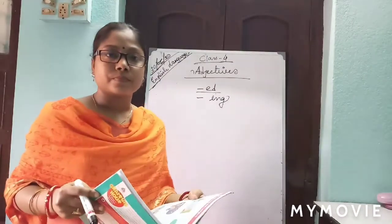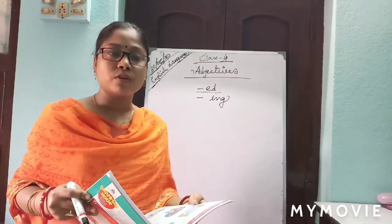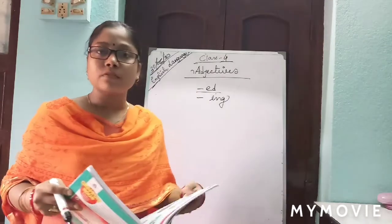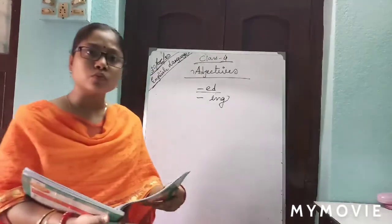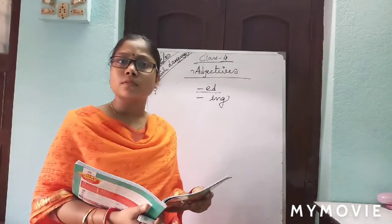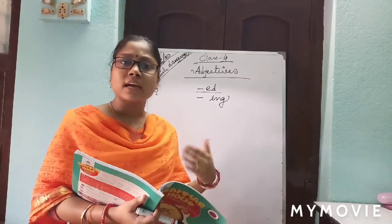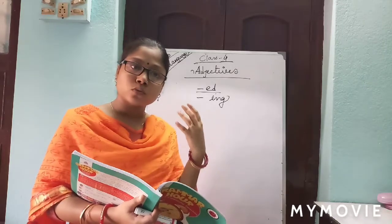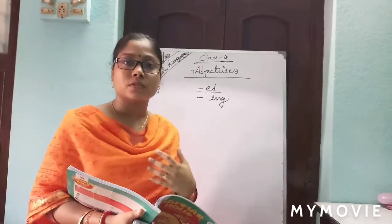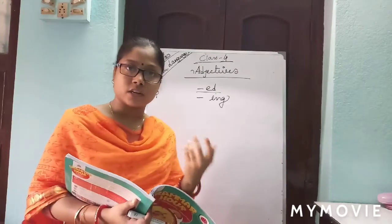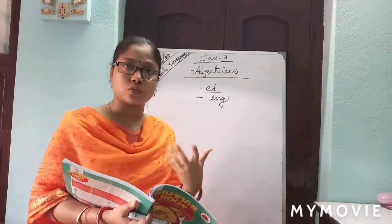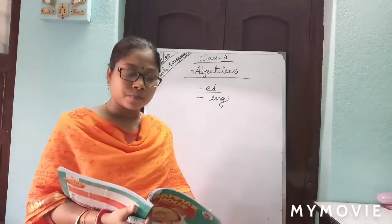These are a kind of adjective. We use '-ed' adjectives to talk about how we feel. For example, 'I'm very excited.' So 'excited' — we use it to describe how we are feeling. It is an adjective describing how we feel.